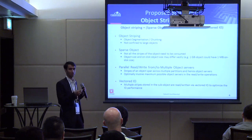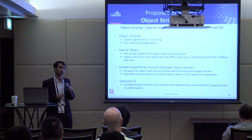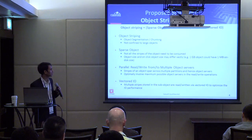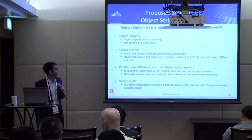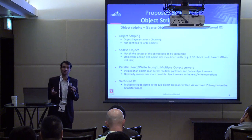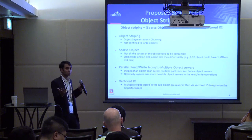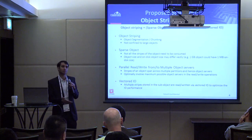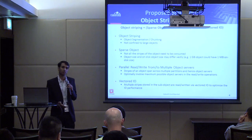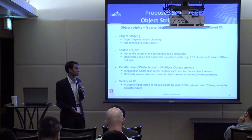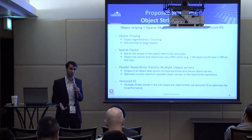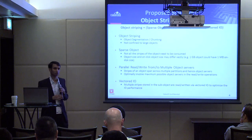Object striping will enable an object to be spanned across multiple object servers. Sparse objects mean not all stripes need to be consumed — you can declare a 1 GB object but have stored only a single stripe at an offset of maybe 1 GB, so the actual disk space consumption is just 1 MB while the object size is 1 GB. Essentially you can write to any offset of an object.